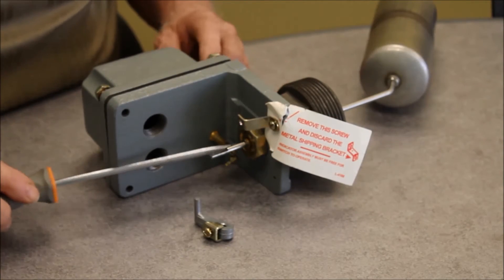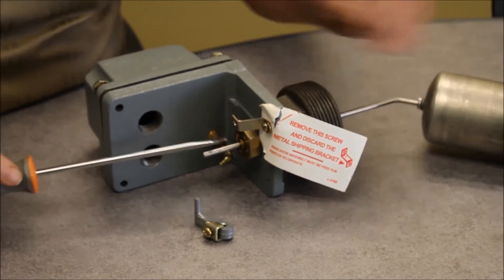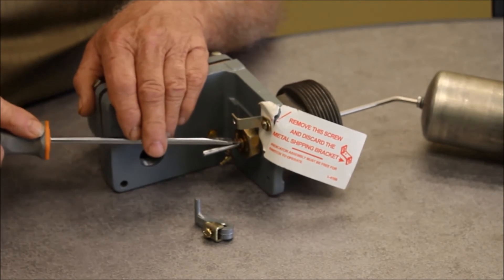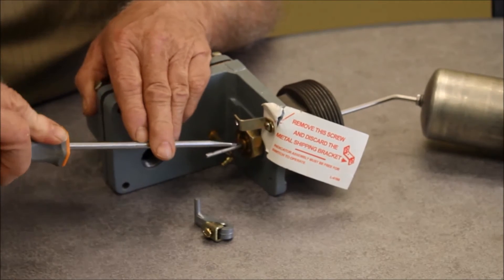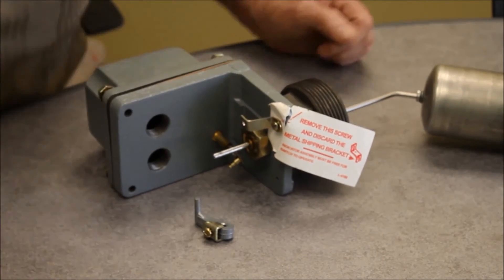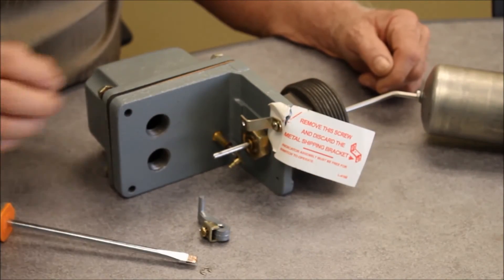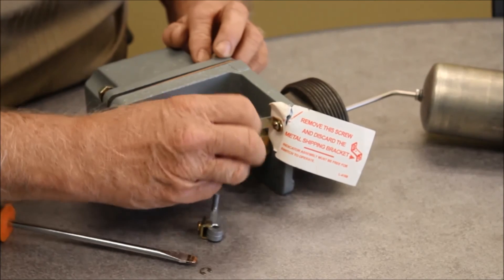There is a retaining bushing that can be removed as well. It's held in place by a clip ring. Removing the clip ring allows an inner bushing to slide out.